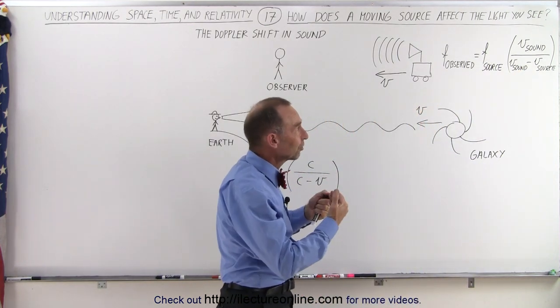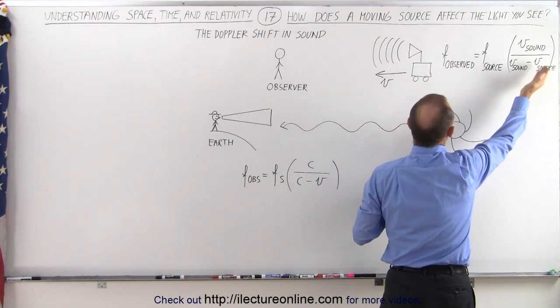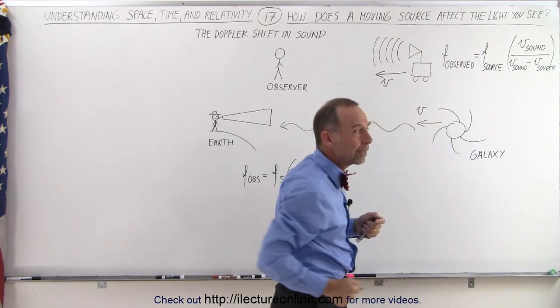And as the velocity of the source becomes larger and larger, the denominator becomes smaller and smaller and the frequency of the observer continues to increase.